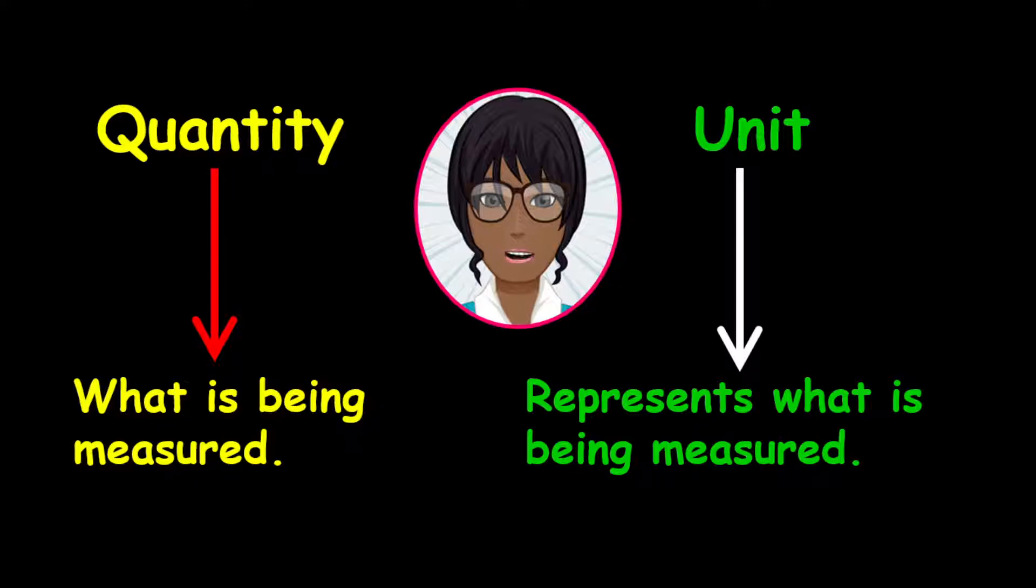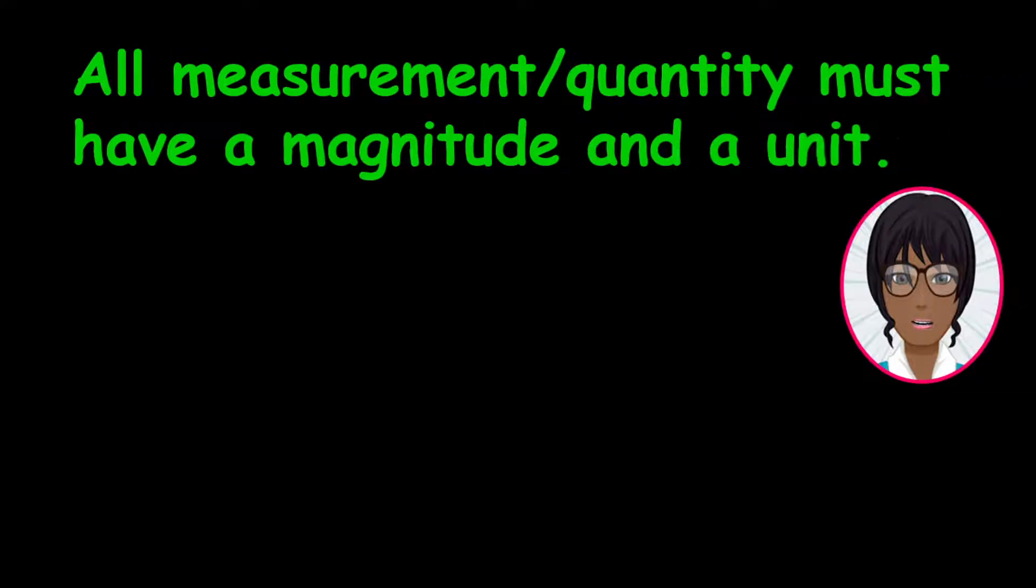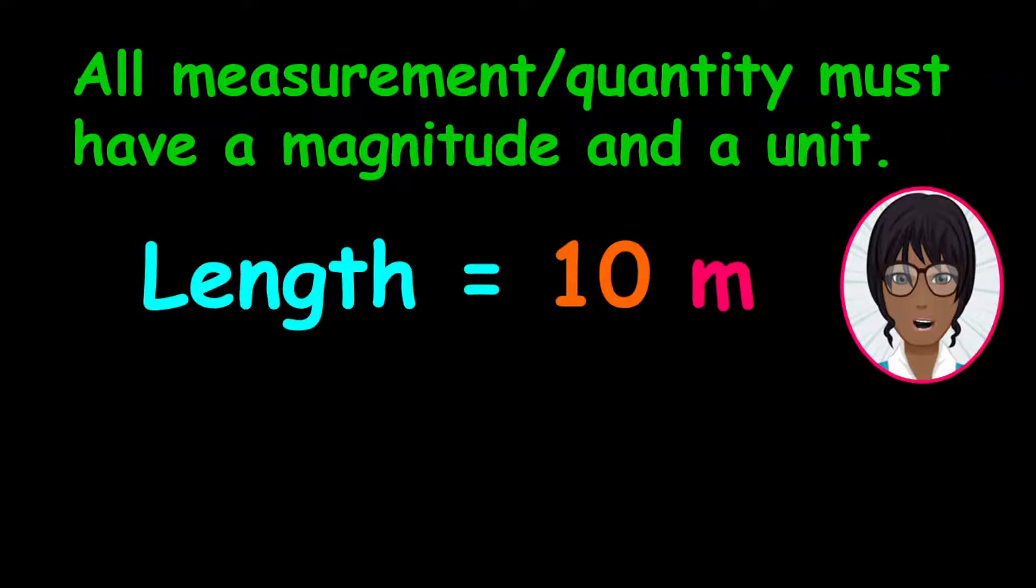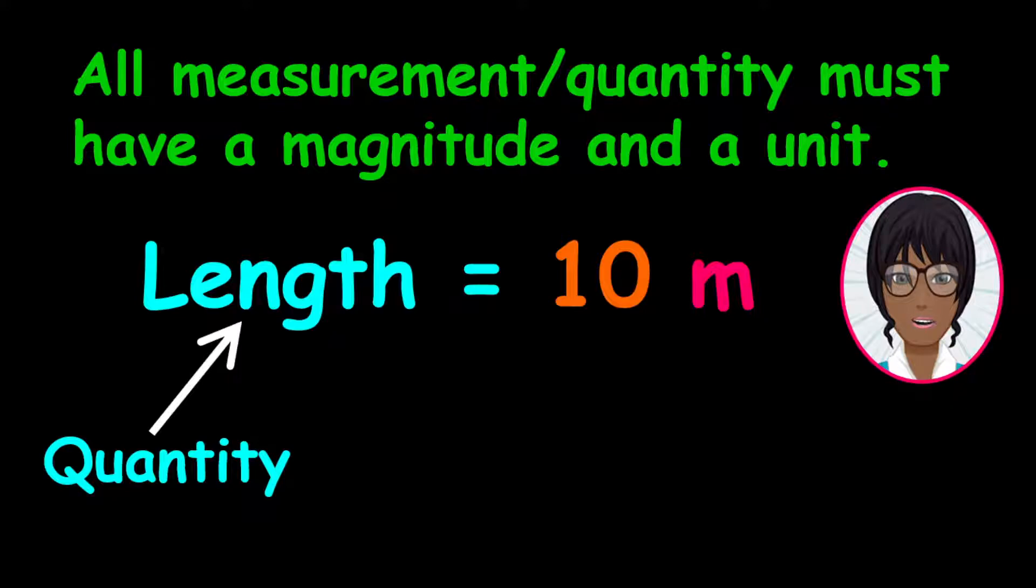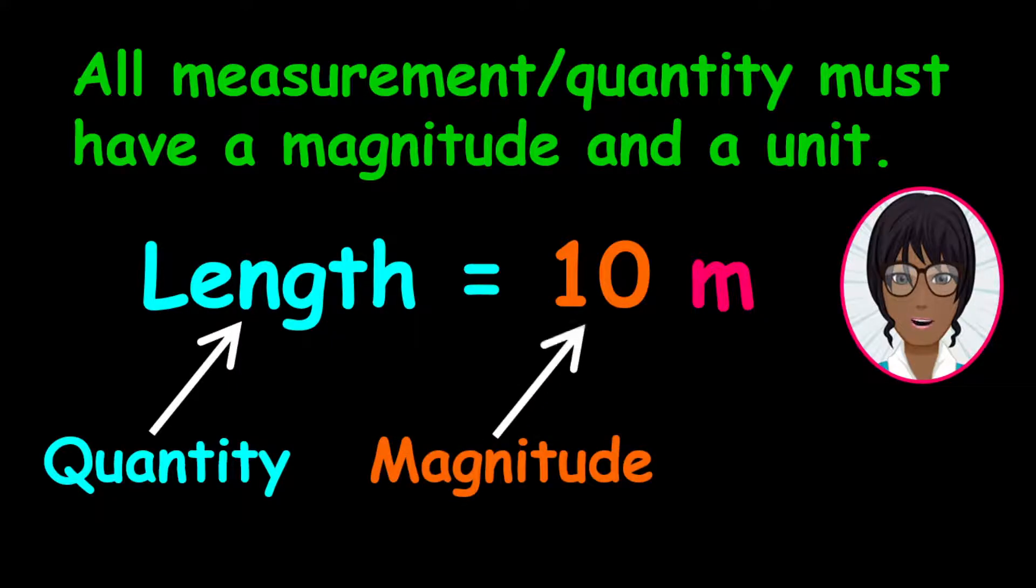Please note that all measurements or quantities must have a magnitude or size and a unit. For example, let's say length equals 10 meters. In this example, 10 is the magnitude of length. It signifies how large the length is, while the meters represent the unit. It indicates that you are measuring length.